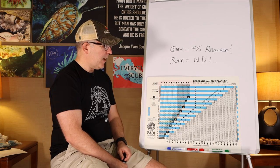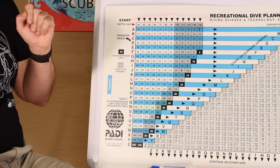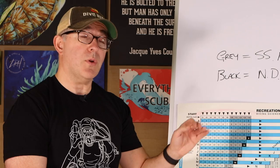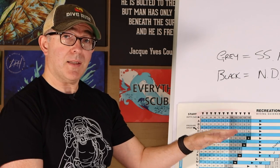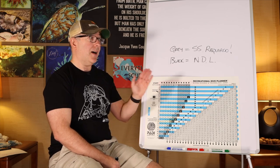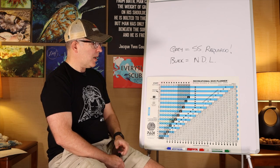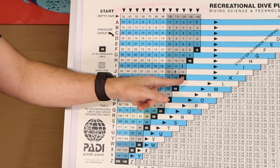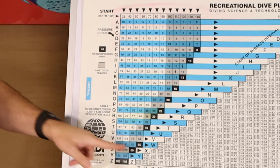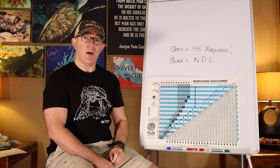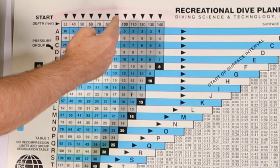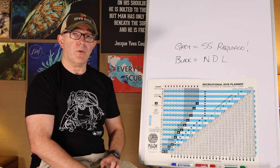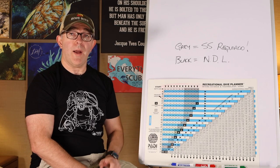Two other areas to point out on the front of the Recreational Dive Planner: gray boxes and black boxes. Gray boxes mean that a safety stop is required — we've either been underwater long enough or deep enough that it makes absolute sense to make a safety stop. Remember, we are recreational divers and we are not planning to make decompression stops on our way to the surface. The black boxes represent your non-decompression limit — the number of minutes you can remain at any depth without requiring a decompression stop on the way to the surface.